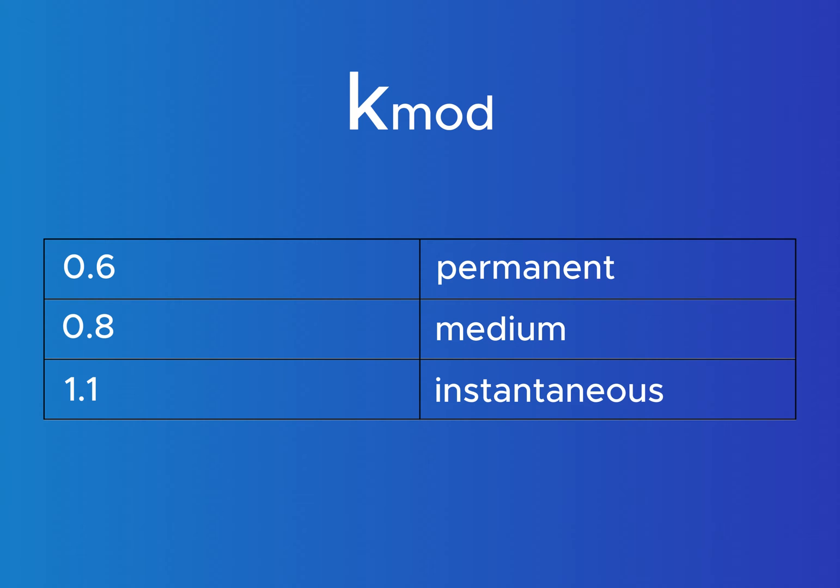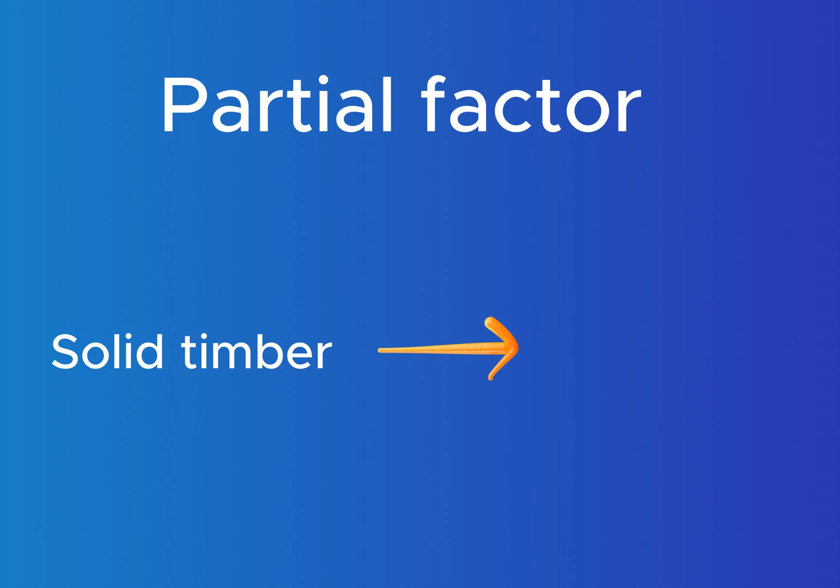But you should also read up in your national annex. The values are often defined differently there. As for steel and concrete, we also use a partial factor for wood. In our case for solid timber we get a partial factor of 1.3.